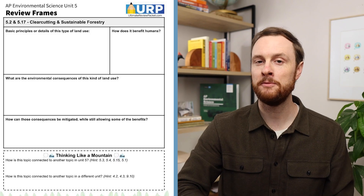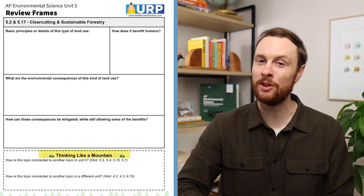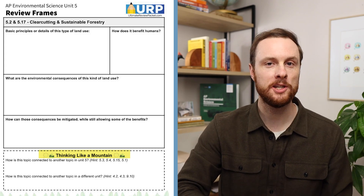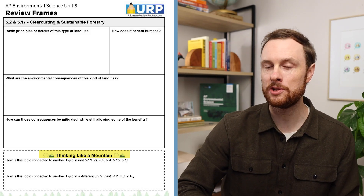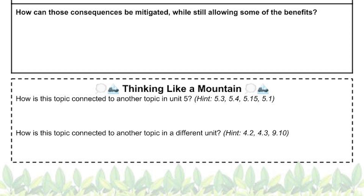But what about the benefits of growing crops, raising cattle, and building roads and cities that only come from clear cutting? After all, we can't really selectively cut our way to new cornfields or new shopping centers. This is where we can really elevate our topic frames for Unit 5 by connecting different topics together. At the bottom of each topic frame there's a 'thinking like a mountain' section where we can practice linking topics within units together. We could borrow a solution from our 5.3 frame and use GMOs to increase yields per acre, which could reduce the need to clear more forested areas for farming. Or we could use crop rotation from our 5.15 frame so that soil doesn't lose its fertility and require new land to replace unproductive soils.